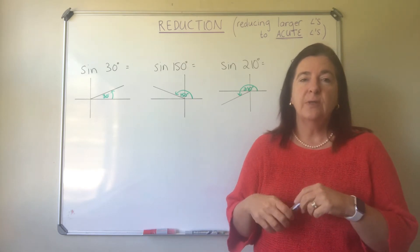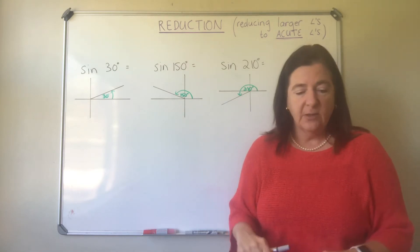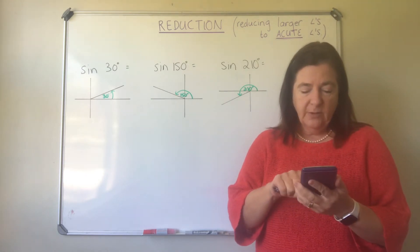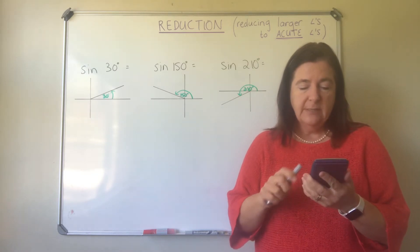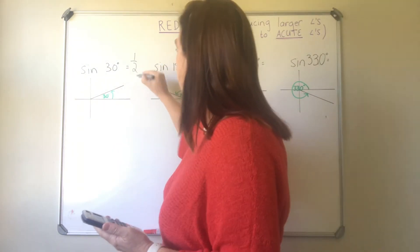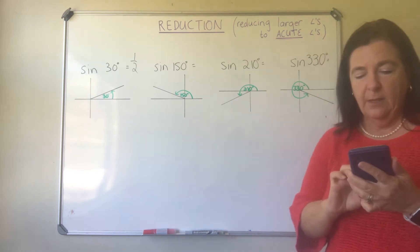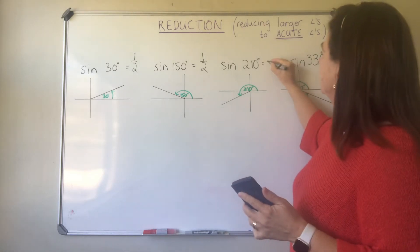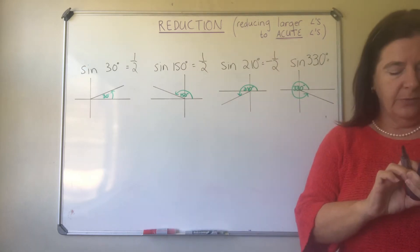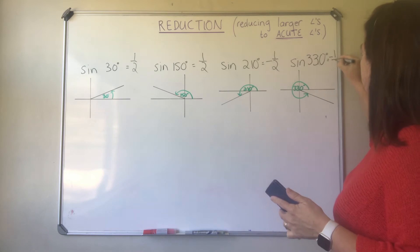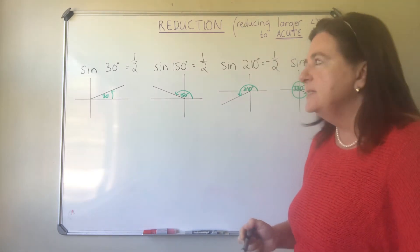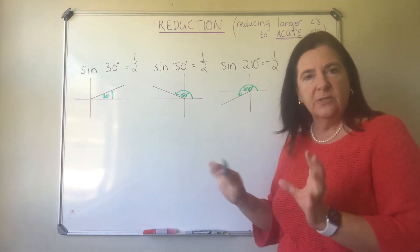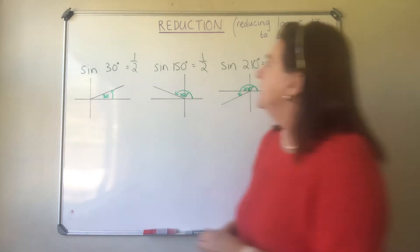I'm going to start off with sine of 30°. 30° is a special angle, so we could do it using our triangles, but we're just going to do it on the Casio. Sine of 30° gives us a half. Now sine of 150° is also a half, sine of 210° is negative a half, and sine of 330° is also negative a half. So each of these angles — 30°, 150°, 210°, or 330° — all reduce to a half, just some are positive and some are negative.